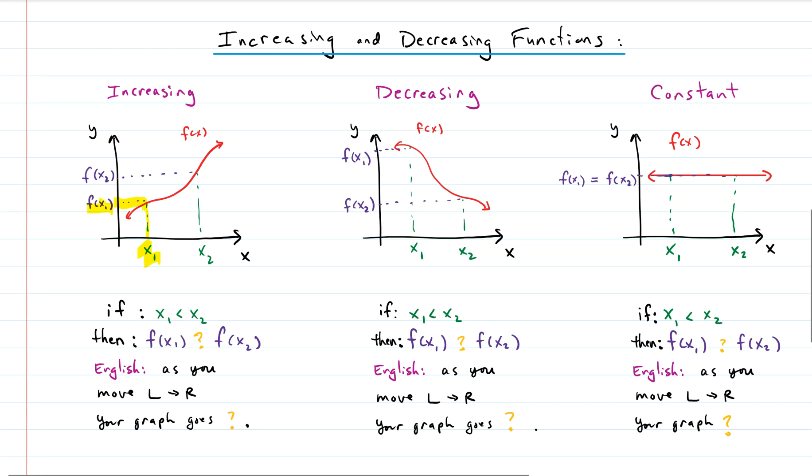If we shoot that x value up to the graph of F and over, we'll have the y value. The y value is the same thing as f of x1. That's just the y value that's associated with x1. So we have an x-y pair right there. We also can do the same thing with x2.